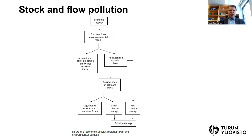During transmission, some proportion of the emission may be absorbed — for example, some noise may not cause damage to anyone, which represents absorbed absorption. The non-absorbed part can then cause damage, and the diagram shows two arrows from non-absorbed emissions: one leads to accumulation in a pollutant stock, and the other represents immediate flow pollution damage causing harm to some recipient or to nature.